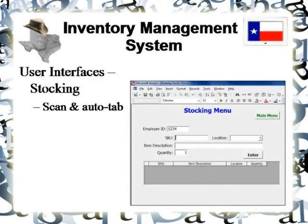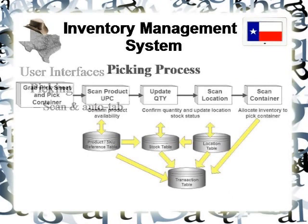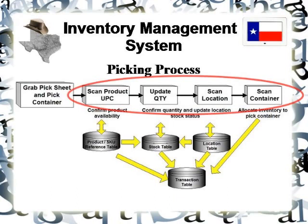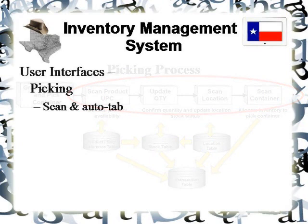These same principles apply to the picking menu. Going back to the picking process flowchart, I want to show where the design decisions actually begin for the user interface. The flowchart shows the sequence of events on the user form — the user scans the UPC, AutoTab takes them to the quantity, and they either hit tab or update the quantity. If the quantity is 1 they leave it alone; otherwise they enter the actual amount. Then they scan the location, and it AutoTabs over to the container. If they have a barcoded container, they scan the barcode, and all of this will be auto-filled. This tells you the layout and sequence of events.